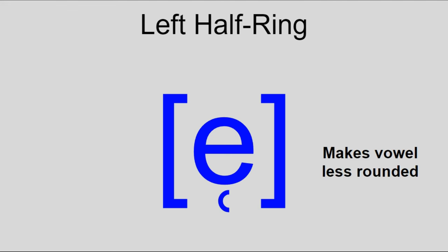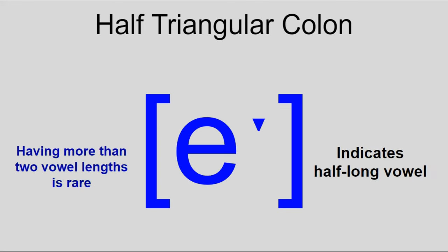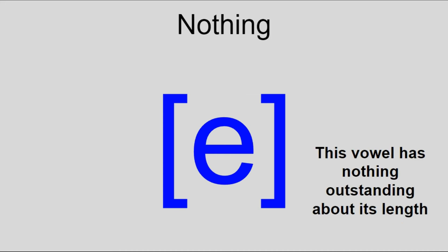Now onto vowel diacritics you're more likely to use, starting with vowel length. Long vowels are represented by a colon made of miniature triangles, of which you'd only use the top triangle if the vowel is half-long. Some languages have extra-short vowels, and those are represented with a breve. Regular short vowels don't get any special treatment in IPA.